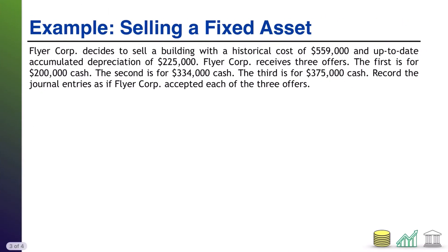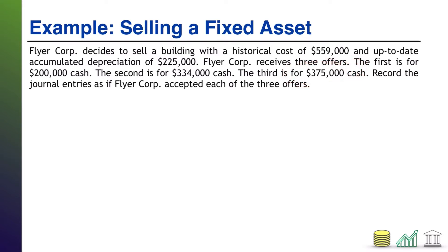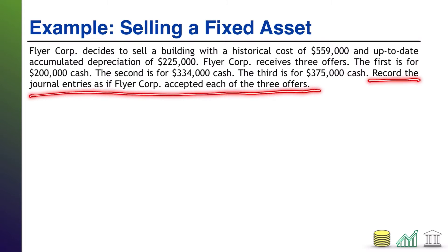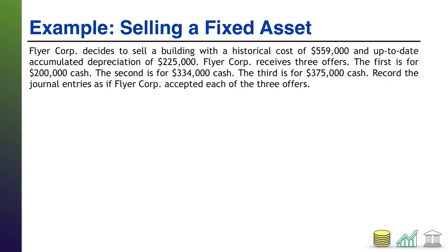Let's try an example. FlyerCorp decides to sell a building with a historical cost of $559,000 and up-to-date accumulated depreciation of $225,000. FlyerCorp receives three offers: the first for $200,000 cash, the second for $334,000 cash, the third for $375,000 cash. FlyerCorp would naturally take the largest offer, but what I want you to do is record the journal entries as if FlyerCorp accepted each of the three offers, because each offer will do something significantly different from a journalizing standpoint.